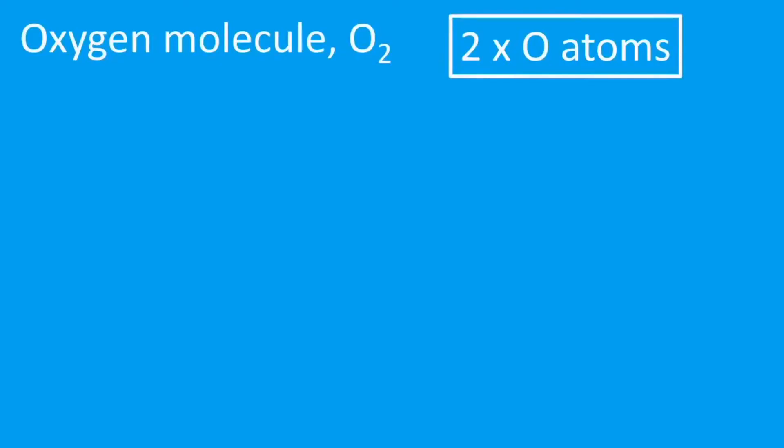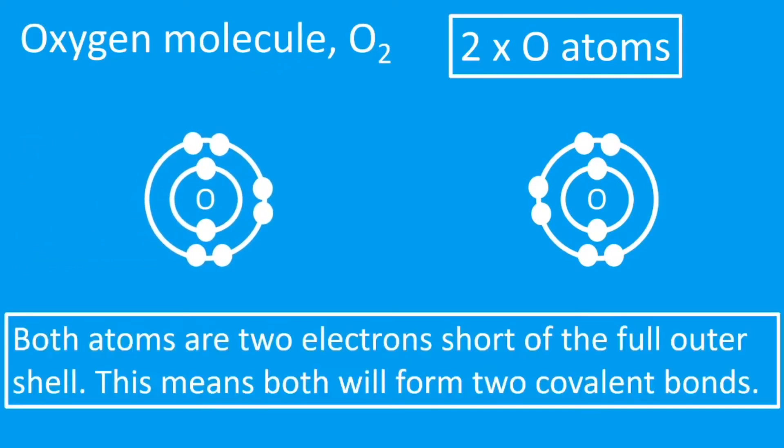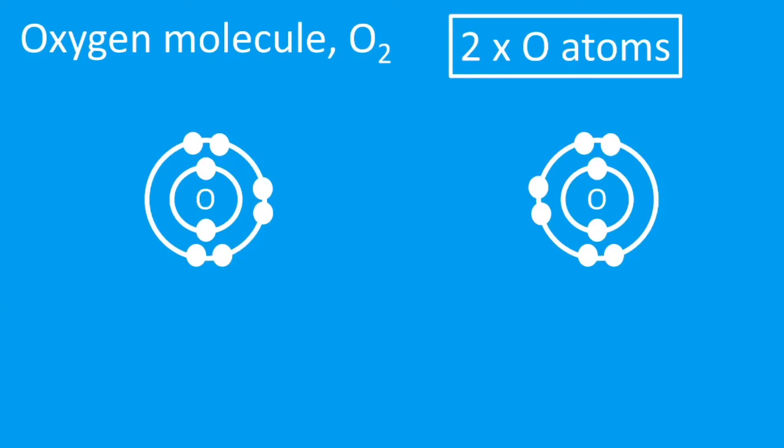Next up then, let's have a look at an oxygen molecule, an O₂ molecule that contains two oxygen atoms. Oxygen is 2,6, so I need to draw two oxygen atoms. Here's our second one now. Now it's in group six, which means it's two electrons short of a full outer shell, which means it will form two covalent bonds.